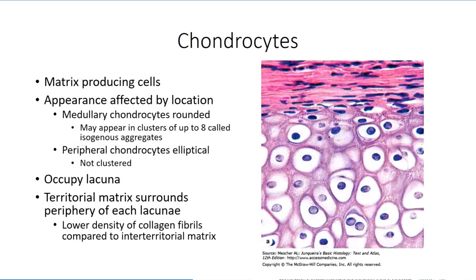At its foundation, cartilage is made up of a distinct group of differentiated mesenchymal stem cells called the chondrocytes, embedded in a matrix of protein and ground substance that they secrete. The appearance of the cells varies depending on their location within the matrix. Centrally located chondrocytes are referred to as medullary chondrocytes. They have a more rounded appearance and are generally found in groups of about eight, which resembles a small cluster of grapes. The cells located towards the surface of the cartilage model have a more elliptical appearance and are separated from one another by secreted matrix.